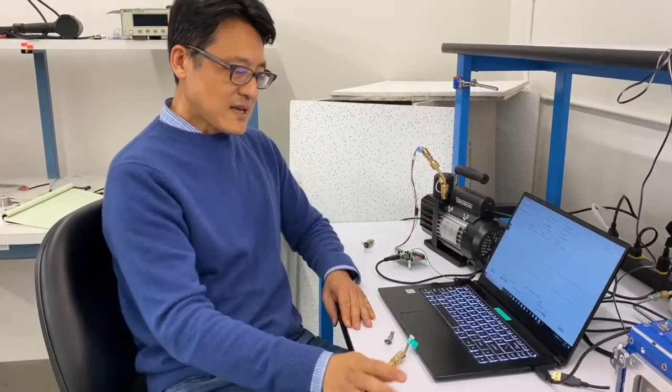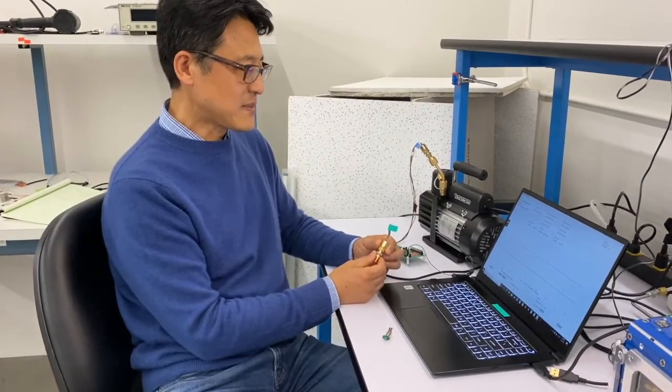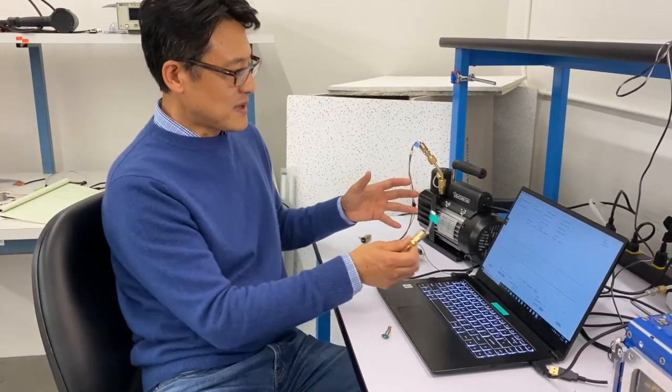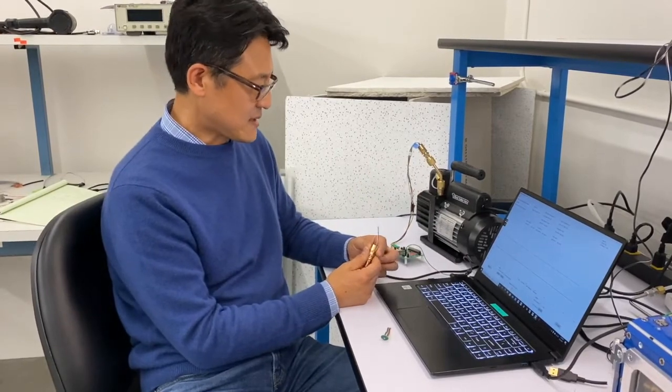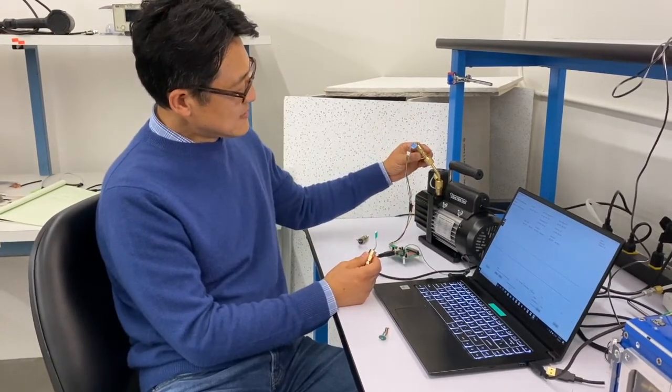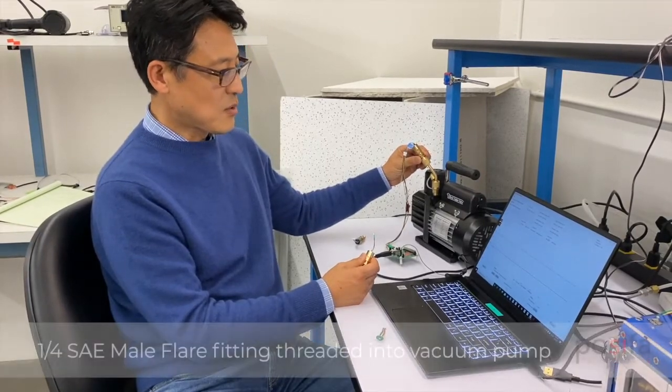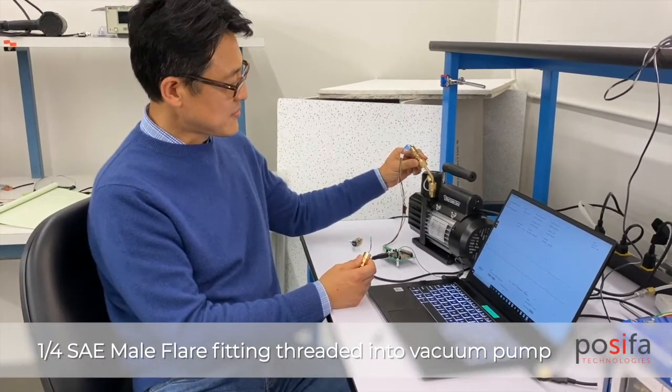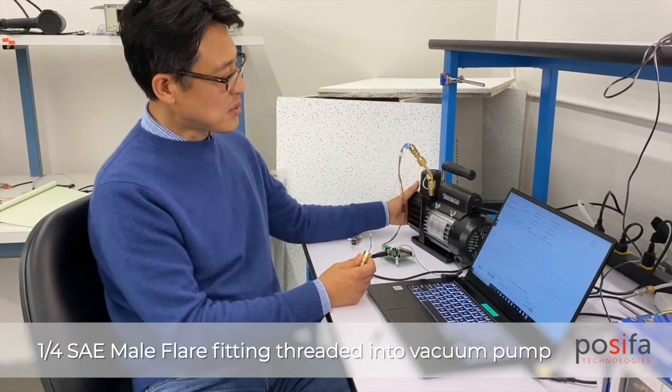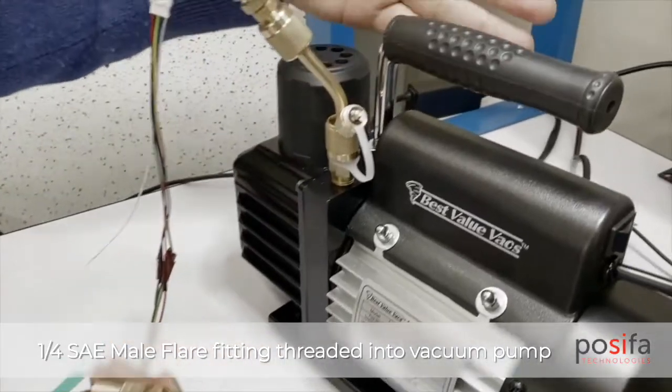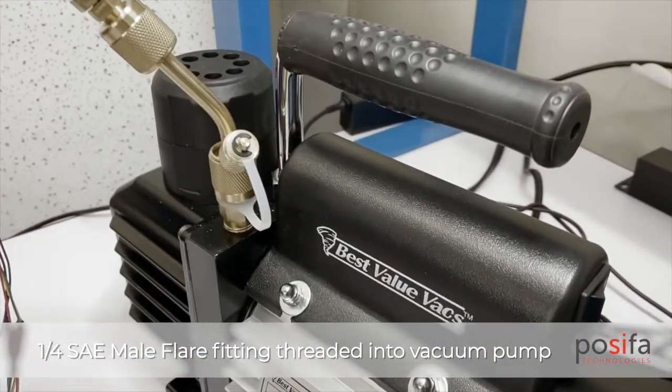Next, I'd like to quickly demonstrate the operations of this evaluation kit. Here we have the sensor probe with quarter MPT fitting threaded into a portable vacuum pump through a fitting provided by the pump manufacturer.